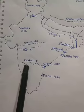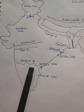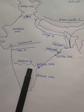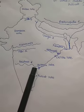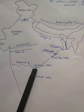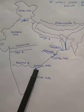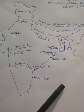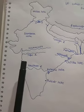Next is the Krishna river. Basically, the Krishna rises from Mahabaleshwar in Maharashtra, flows through Andhra Pradesh, forms a delta, and then drains into the Bay of Bengal.